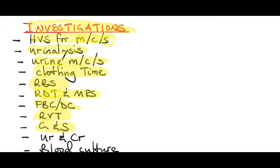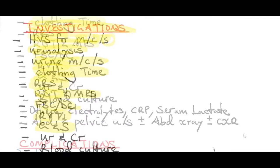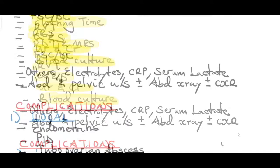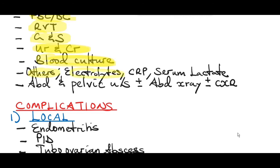Overwhelming sepsis also causes anemia. Do urea and creatinine, as septic miscarriage can complicate into multi-organ dysfunction due to septic shock — check kidney function. Do a blood culture. Remember that blood culture and all microscopy, culture and sensitivity samples should be taken before starting the patient on antibiotics. You can also do electrolytes, as sepsis can cause deranged sodium, potassium, and chloride.